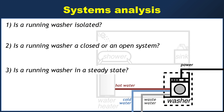So now to answer the first question: is a running washer isolated? Running just means it's actually going at the time. No way is this isolated — it has power coming in from the outside world, and potentially at any given time it can have water going in or coming out. There are all sorts of interactions between the system and the stuff outside the system. It is not isolated in any sense.